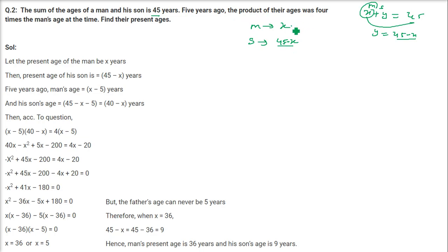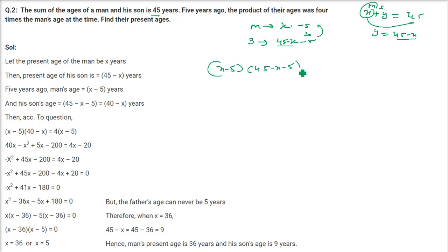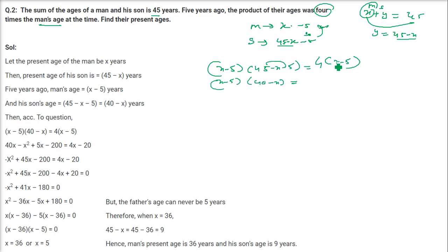5 years ago the product of their ages was 4 times the man's age at that time. So the equation is: (X minus 5)(40 minus X) equals 4(X minus 5). Expanding: 40X minus X square minus 200 plus 5X equals 4X minus 20. Bringing everything together, we get minus X square plus 40X plus 5X and then minus 200 minus 4X plus 20.